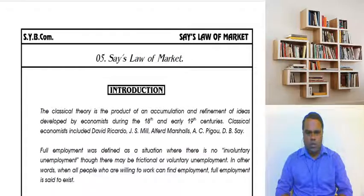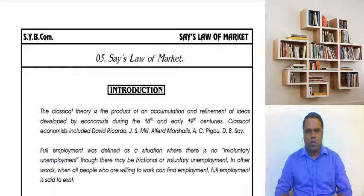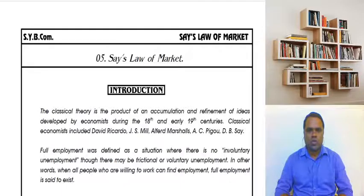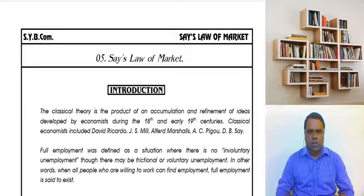Another example of frictional unemployment: during production, if raw materials run out and the new stock takes two days to arrive, workers are temporarily unemployed for those two days. So frictional unemployment can be voluntary in nature. Full employment exists as long as there is no involuntary unemployment.